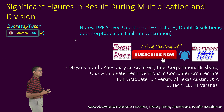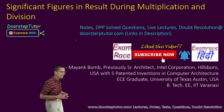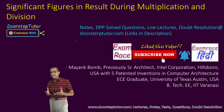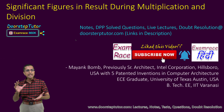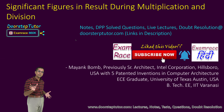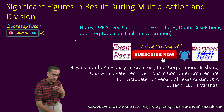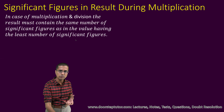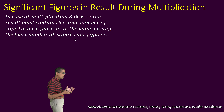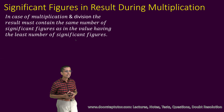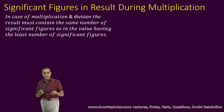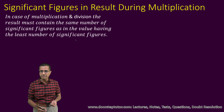Now that we have understood what significant figures are, we will look at some of the rules on how to propagate the significant figures in the operands to my final answer. In this class, we will be looking at what happens to significant figures when I do multiplication and division with quantities which have a defined number of significant figures.